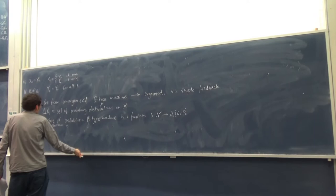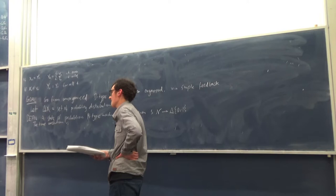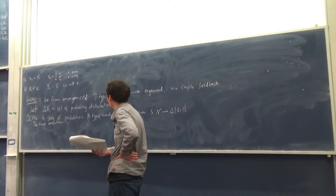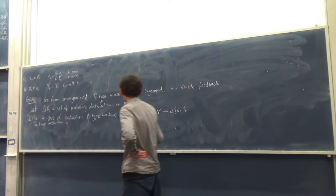Why is a probabilistic machine a natural follow-on? The idea is that the machine has some uncertainty in what it's doing, and one way to model that is to say that the values of the nodes inside the machine are uncertain — and that's exactly what probability distributions capture.